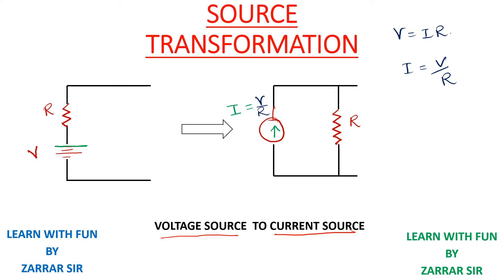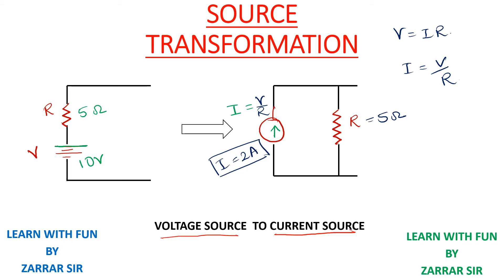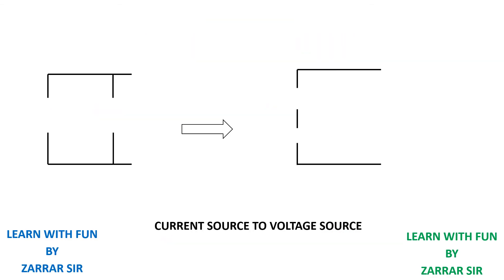Let's take an example to understand this in a more practical way. I'll take resistance as 5 ohms and voltage as 10 volts. The resistance value will be exactly the same — 5 ohms — but my current will be V divided by R, which is 10 divided by 5, so I equals 2 amperes. Remember: voltage converts to current, and the series resistance converts to a parallel resistance. This is voltage-to-current transformation.